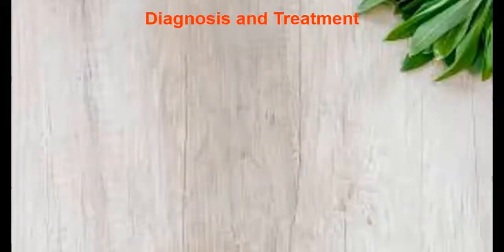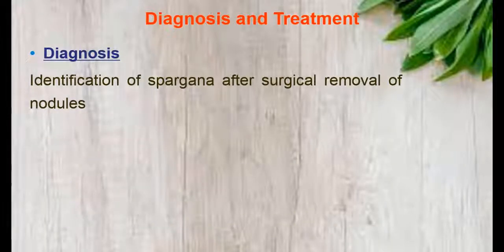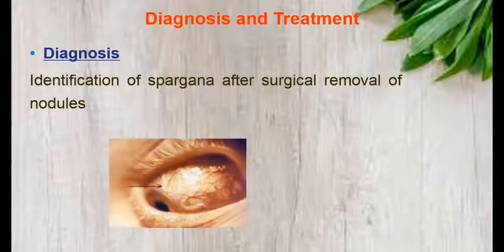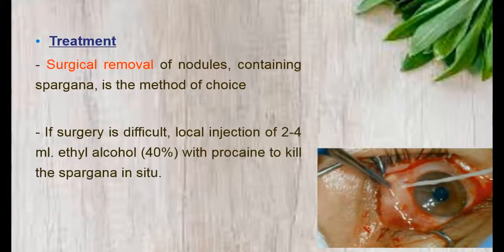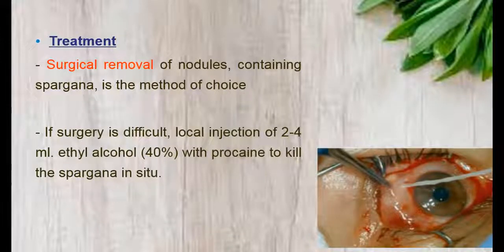Regarding diagnosis of sparganosis, it is made by identification of larvae after surgical removal of nodules. Treatment is by surgical removal of nodules containing Sparganum, which is the method of choice. If surgery is difficult, local injection of 2–4 mL of ethyl alcohol 40% with procaine is used to kill the Sparganum in situ.